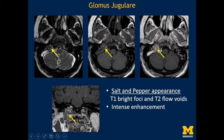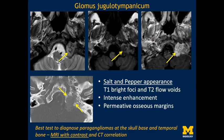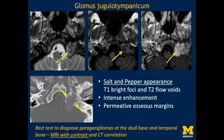Another patient with left-sided pulsatile tinnitus shows the salt-and-pepper appearance again with a hyper-enhancing lesion. A correlative CT shows a clear permeative osseous margin. The best test to diagnose a paraganglioma at the skull base or temporal bone is a combination of both MRI with contrast and CT correlation. MRI classically shows the salt-and-pepper appearance, while the CT permeative margins help distinguish this from schwannoma or meningioma. Hypervascular metastases — for example from renal cell carcinoma — can also cause pulsatile tinnitus.